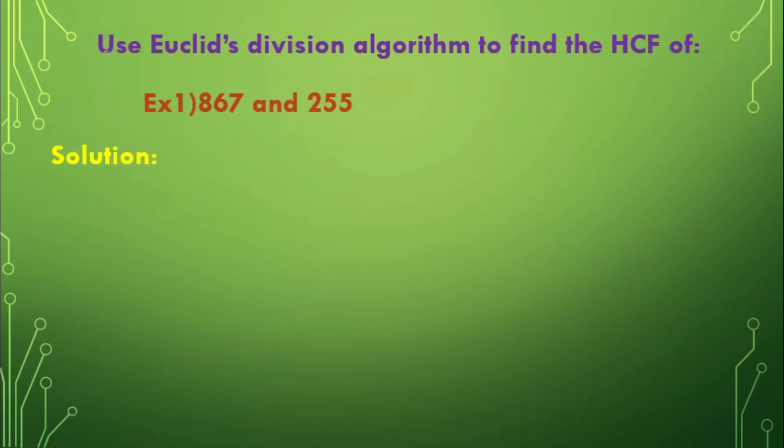Let us solve some examples by using Euclid's Division Algorithm. Example 1. Use Euclid's Division Algorithm to find the HCF of 867 and 255. Solution. Given numbers 867 and 255. As we know, 867 is greater than 255.